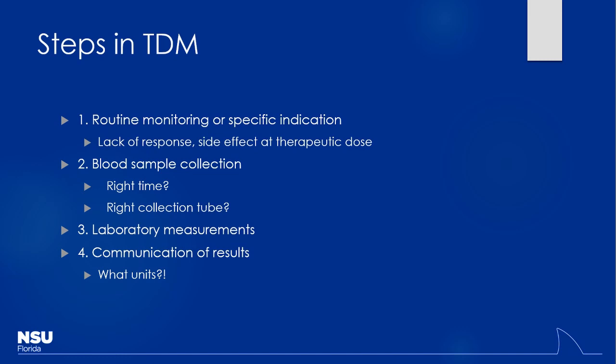There's always a therapeutic range associated with this, because if there isn't one, you just get a random level and you don't know what it means. You should never order anything that you don't know what you're going to do with the results. If a lab result's not going to change your management, there's no point in ordering it in the first place. So what are the steps for actually doing therapeutic drug monitoring for these patients?